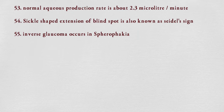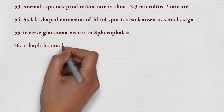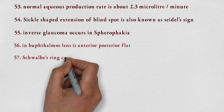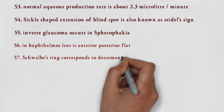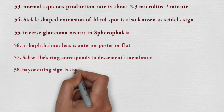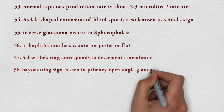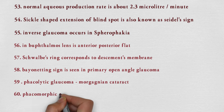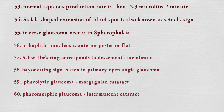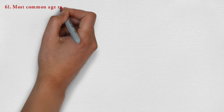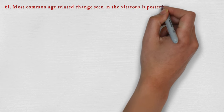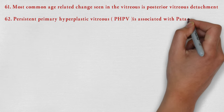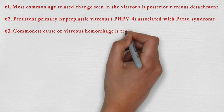Inverse glaucoma occurs in spherophakia. In buphthalmos, the lens is anteroposteriorly flat. Volvosse ring corresponds to Descemet's membrane. Bionetting sign is seen in primary open angle glaucoma. Phacolytic glaucoma causes Morgagnian cataract, while phacomorphic glaucoma causes intumescent cataract. Most common age-related change seen in vitreous is posterior vitreous detachment. Persistent primary hyperplastic vitreous is associated with Patau syndrome. Commonest cause of vitreous hemorrhage is trauma.